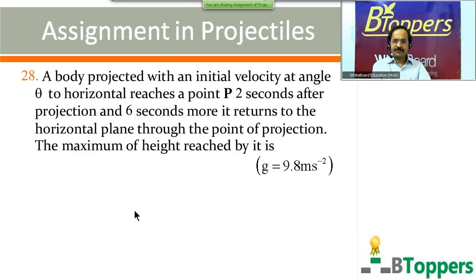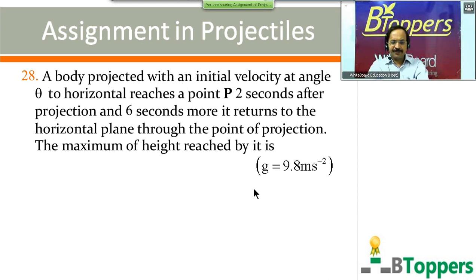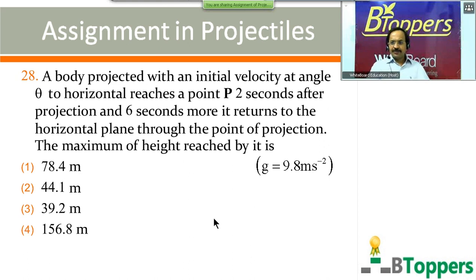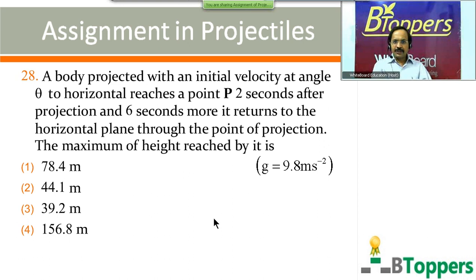Question number 28: a body is projected with an initial velocity at angle theta to the horizontal. It reaches a point P two seconds after projection, and six seconds more it returns to the horizontal plane at the point of projection. The maximum height reached by it is — four options on screen. Come on, try the question, taking g = 9.8 m/s².